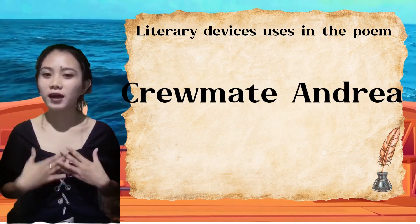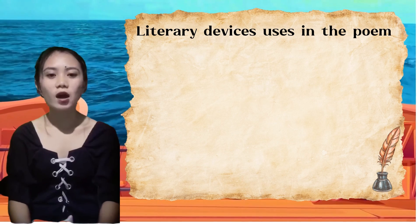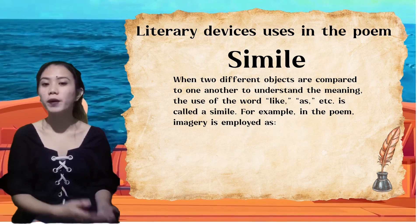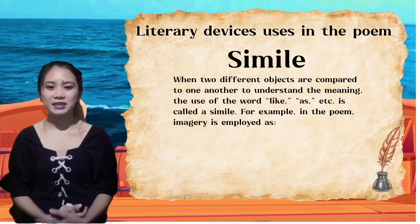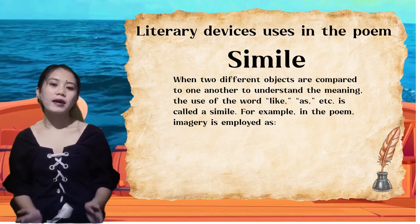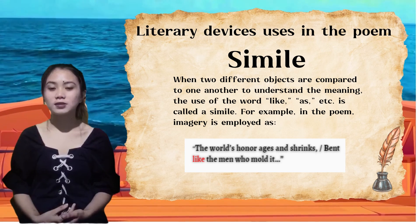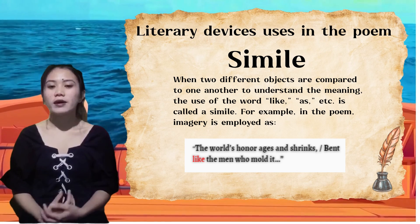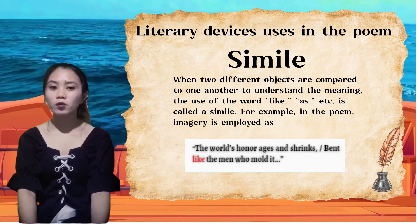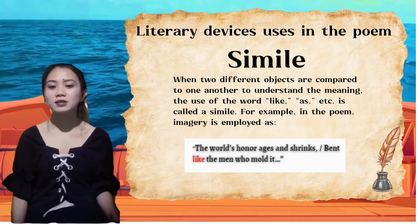Ahoy mateys! I'm crewmate Andrea. To continue what crewmate Bea discussed, here are more literary devices used in the poem. Simile: when two different objects are compared using 'like' or 'as.' For example, in the poem: 'the world's honor ages and shrinks, bent like the men who mold it.' In this line, the readers' attention is drawn to the increasingly impure and corrupt nature of the world. The poet asserts that man, by essence, is sinful, and this fact underlines his need for God.